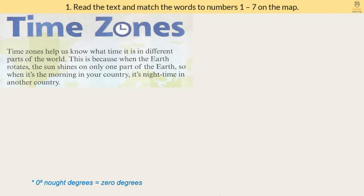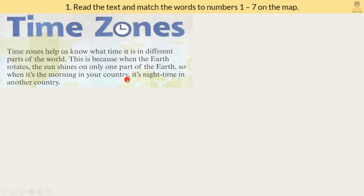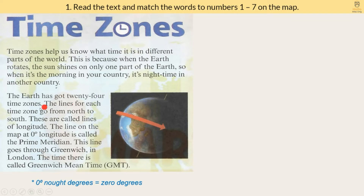Next, read the text about time zones. Time zones help us know what time it is in different parts of the world. This is because when the Earth rotates, the sun shines on only one part of the Earth. So when it's morning in your country, it's night time in another country. The Earth has got 24 time zones. The lines for each time zone go from north to south — these are called lines of longitude. The line on the map at 0 degrees longitude is called the prime meridian.